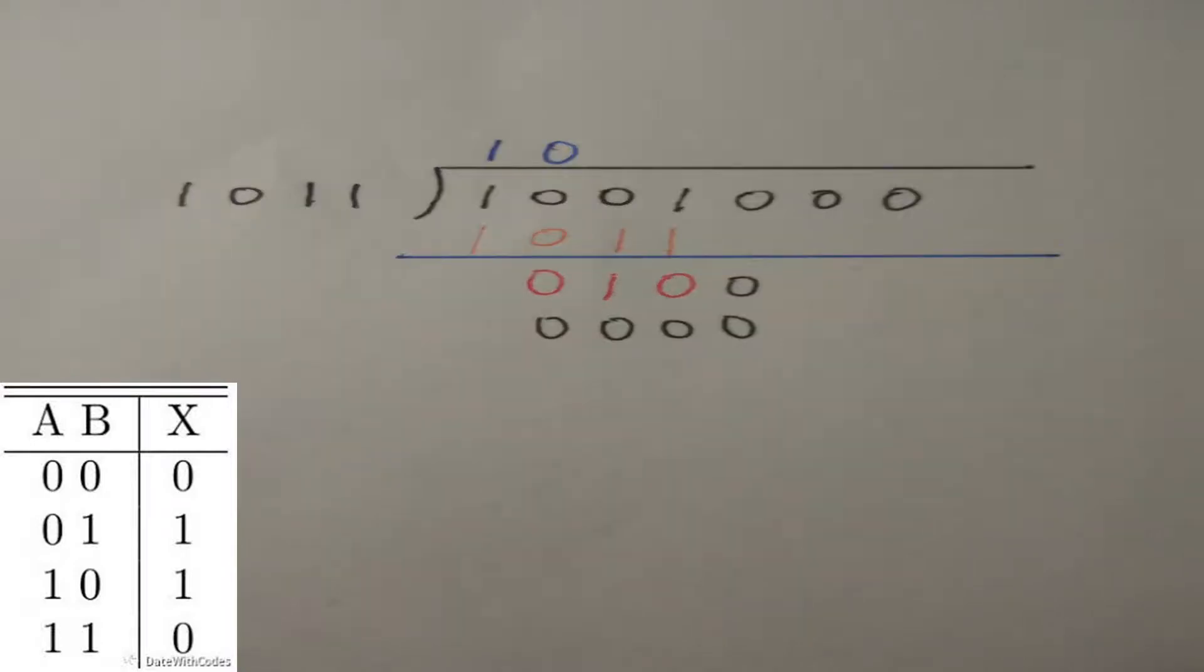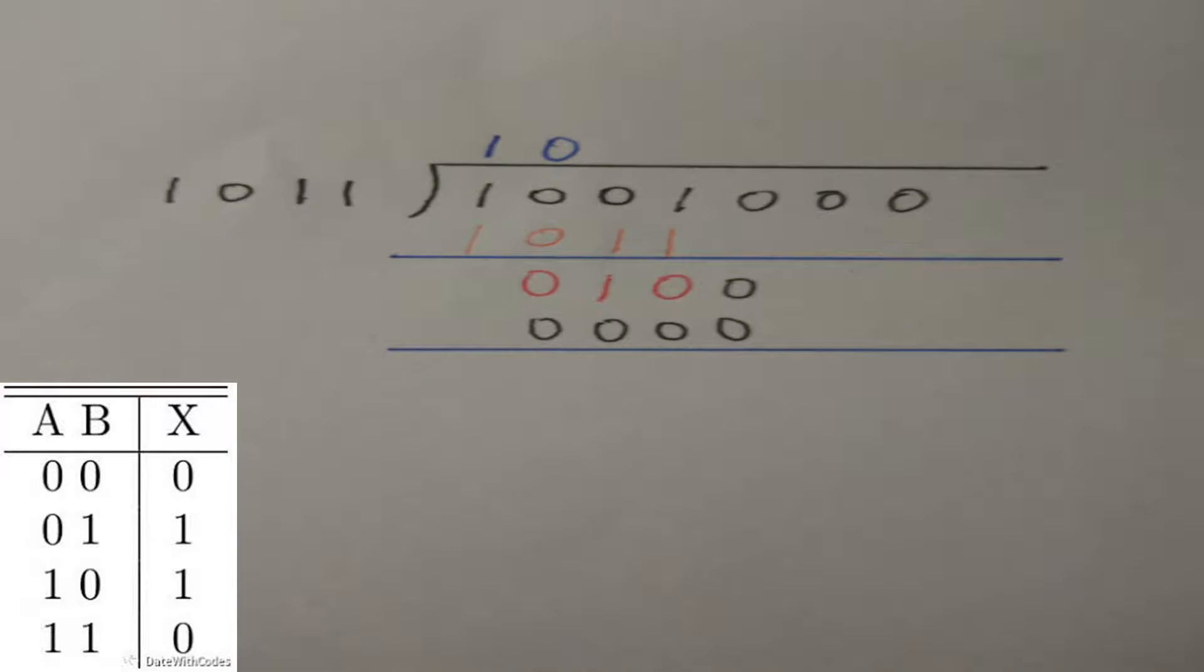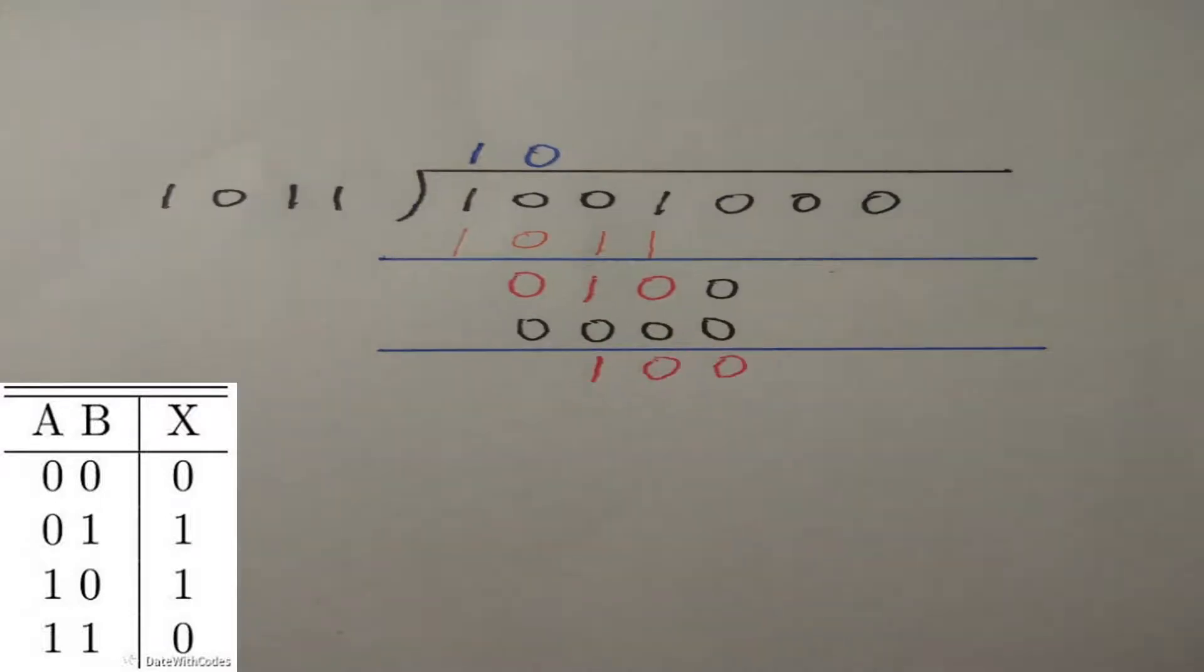Next step: use XOR to calculate 1010 and 0000. We can get 1000. Repeat the same steps until we get a remainder.